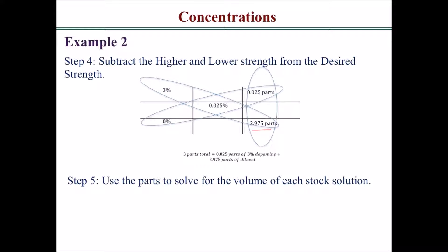Use the parts to solve for the volume of each stock solution using proportions. Since 0.025 parts of the 3% dopamine hydrochloride must be in 5 milliliters, set up the proportion: 0.025 over 2.975 equals 5 milliliters over X, where X is the volume of sodium chloride injection needed. Solving this proportion gives you the milliliters of sodium chloride to add.